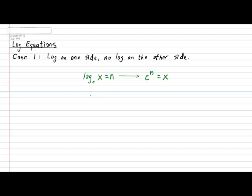Let's take a look at a few simple examples of this procedure in action. I would like to solve the log equation log in base 3 of 4x equals 2. Solve for x. Resorting to our definition of a log, we can rewrite this in exponential format by saying that 3 exponent 2 should give us back our 4x. And now it just becomes a simple matter of isolating the x.